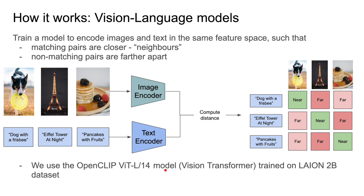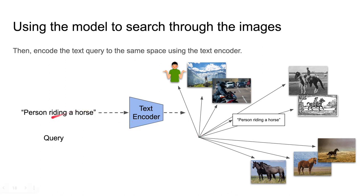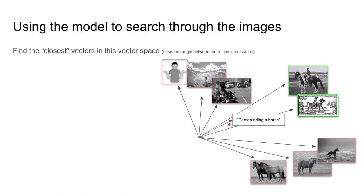In WISE, we use the OpenCLIP-VITL14 model, which is a vision transformer trained on the LAION dataset with 2 billion pairs of images and text. To perform searches, we first take all the images in a given collection and use the image encoder to map them onto a high-dimensional vector space, so each image is represented by a vector. Then we take the user's text query — such as "person riding a horse" — and encode it to the same vector space using the text encoder. Lastly, we find the images whose vectors are closest to the query vector using cosine distance, and these images are returned to the user as the search result.